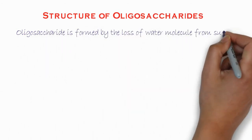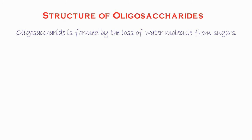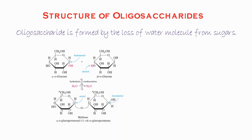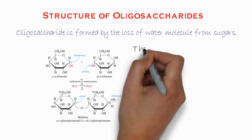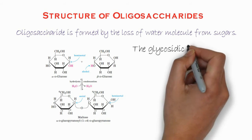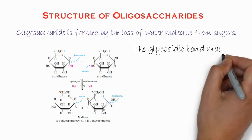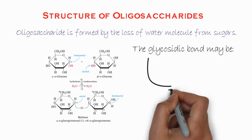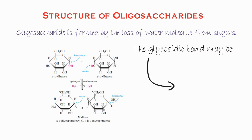Oligosaccharides are formed by the loss of a water molecule from sugar units. A glucose unit and a fructose unit — or two glucose units — can join together, forming a glycosidic bond by the loss of a water molecule. The bond which is formed is known as a glycosidic bond.